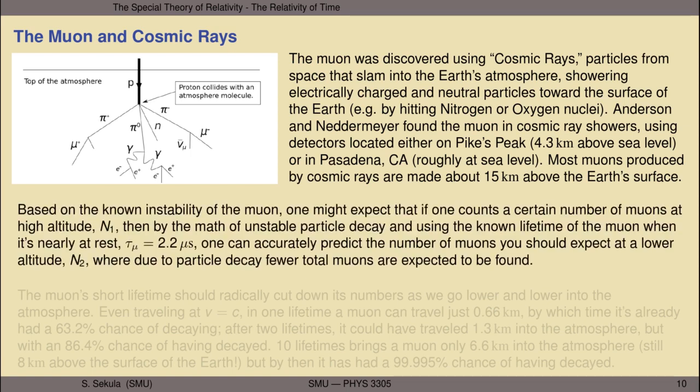Based on the known instability of the muon, one might expect that if one counts a certain number of muons N1 at a high altitude, then using the known lifetime of the muon when nearly at rest—tau of roughly 2.2 microseconds—one could accurately predict the number of muons N2 expected at a lower altitude. At that lower altitude, because particle decays will have had a chance to happen, we expect fewer total muons to be found.